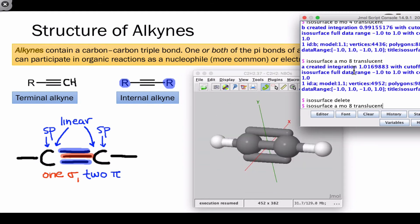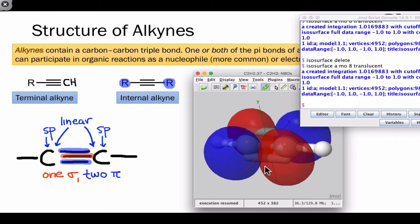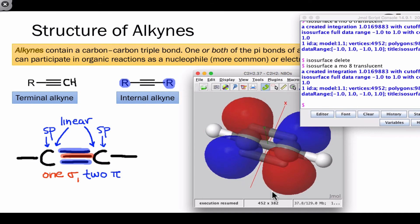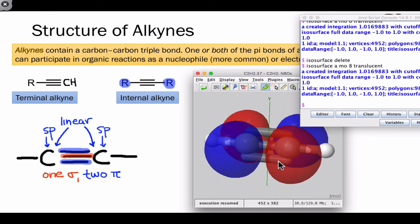The pi star antibonding orbitals actually display a similar property. For example, here's the one along the x-axis, and there is a complementary pi star orbital corresponding to the other pi bond that runs along the y-axis.